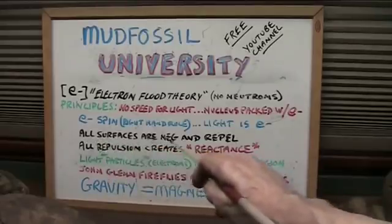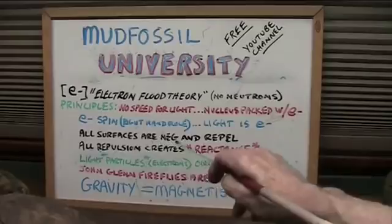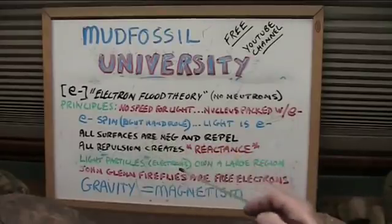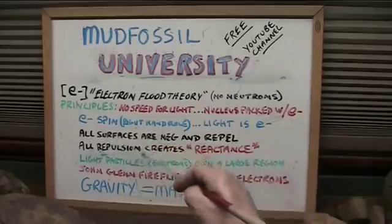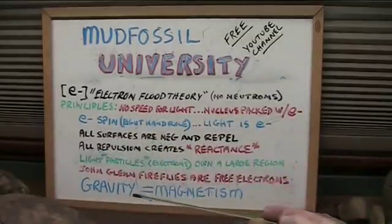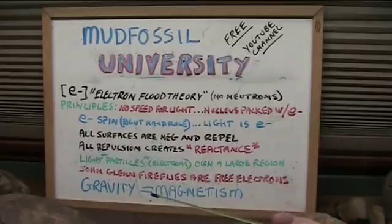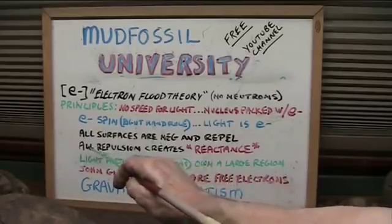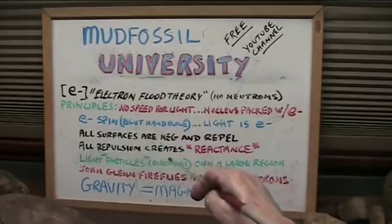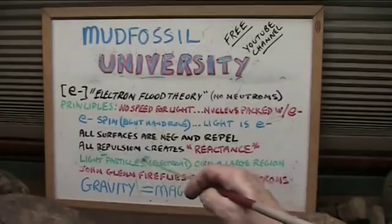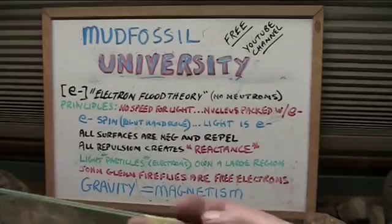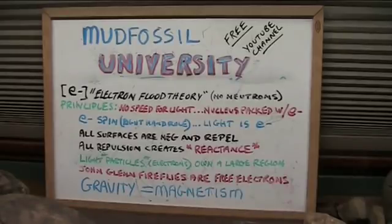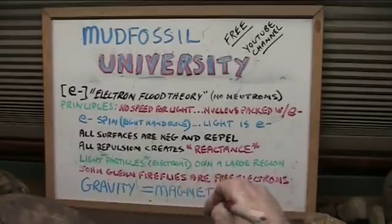All surfaces — every single surface there is — not one single thing exists that is not negative on its surface, because every atom is coated with electrons. They circle it. All atoms make up molecules, and there are zero things that are positive, except the atomic bomb. So all surfaces repel other surfaces, every single one of them — very lightly mostly, and some quite a bit. It depends on what that surface is composed of and what the other surface is composed of. That's magnetism. Gravity is magnetism — we're going to get there.